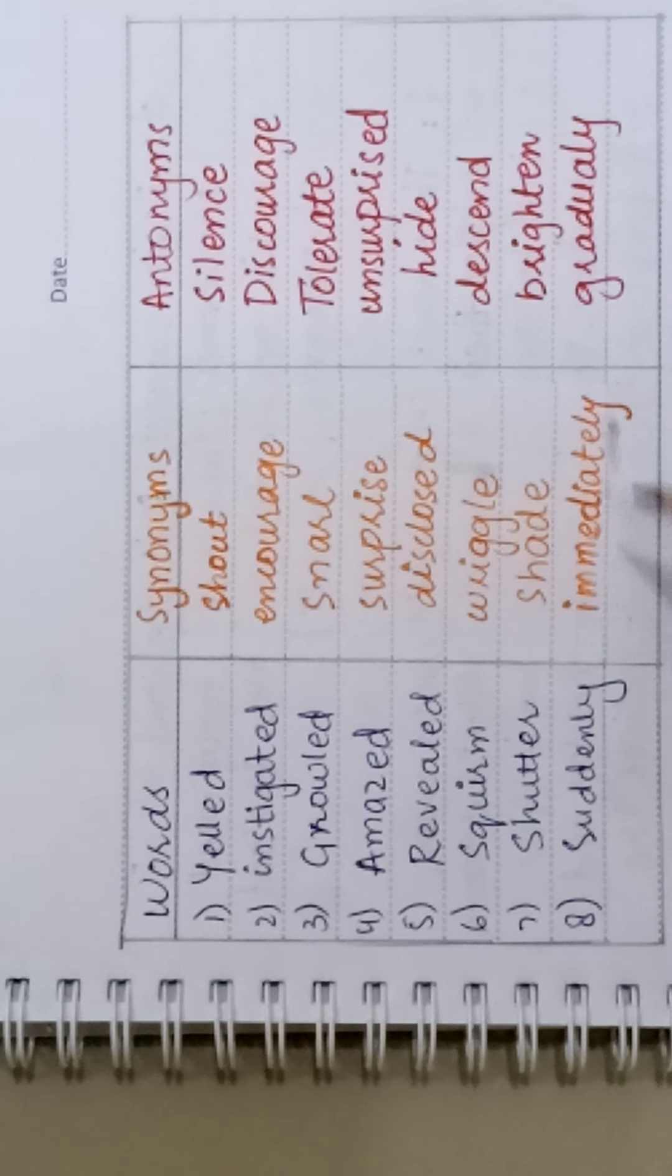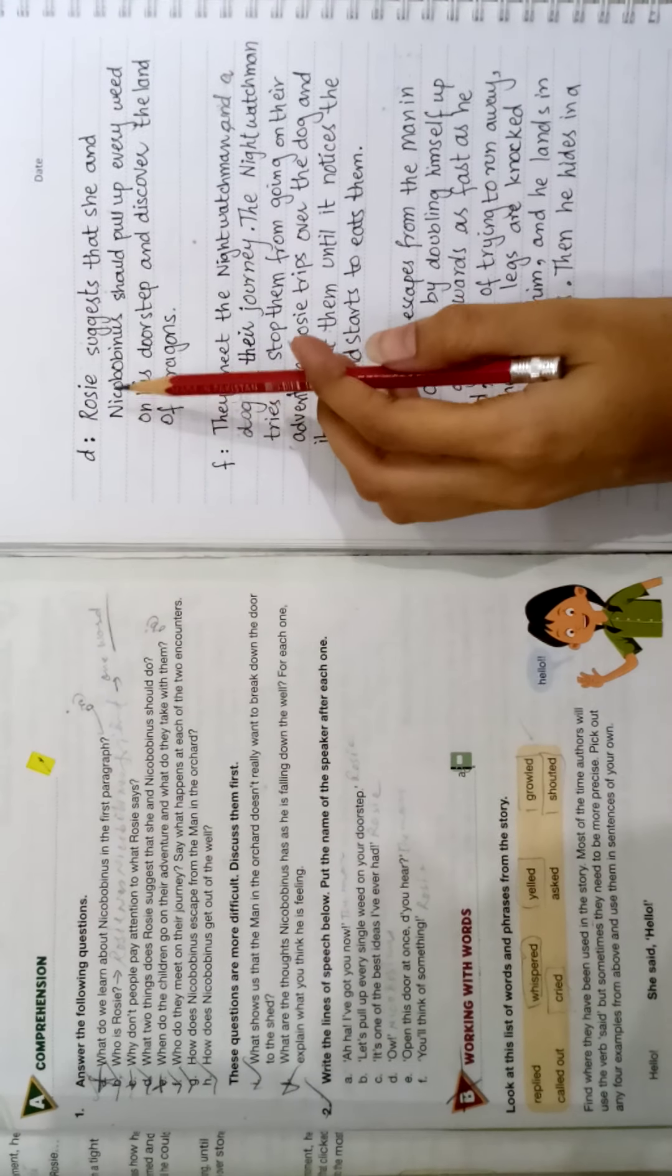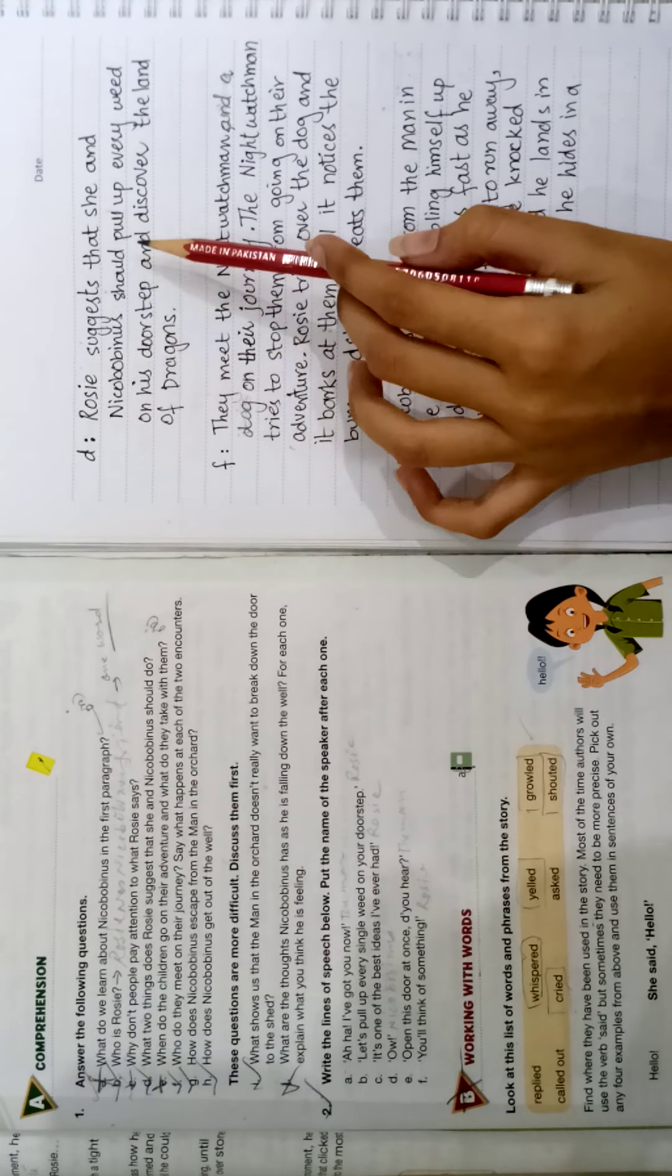Now let's go to page number 11 exercise, question number 1. Answer the following questions starting question D. What two things does Rosie suggest that she and Nicobobinus should do? Rosie suggested that she and Nicobobinus should pull up every weed on his doorstep and discover the land of dragons.